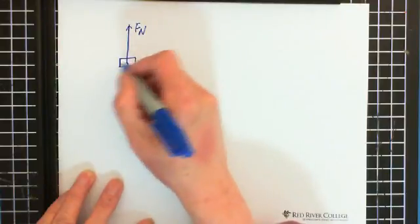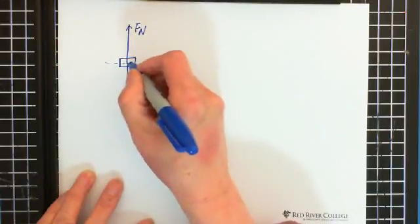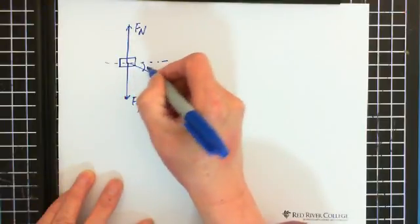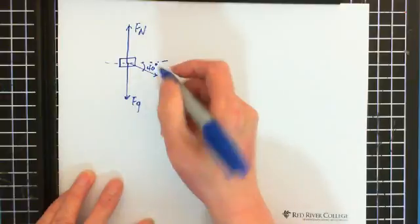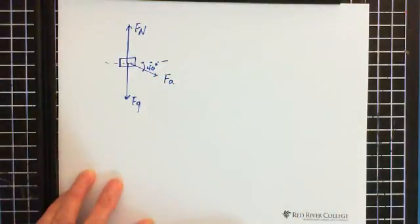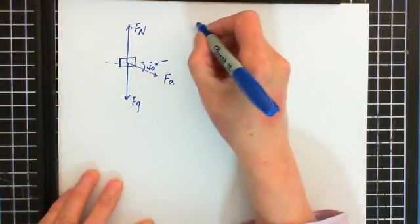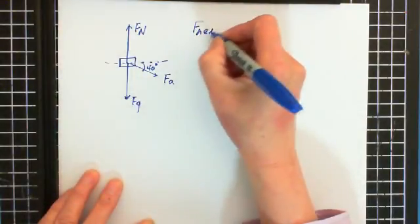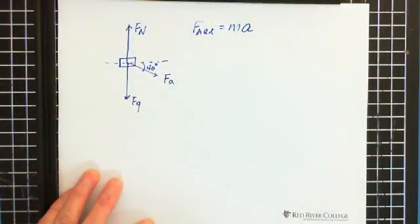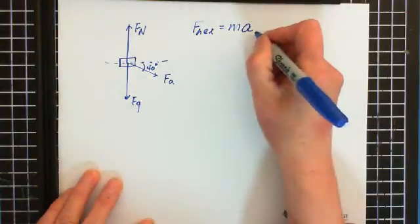And we have an applied force FA at 40 degrees from the horizontal. Following Newton's second law, we have net force equals MA. Because the mower is moving horizontally with horizontal acceleration, the acceleration is horizontal.